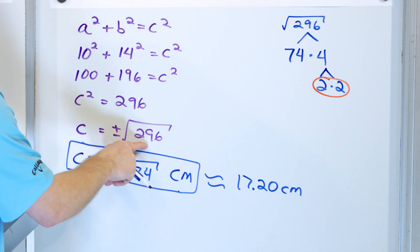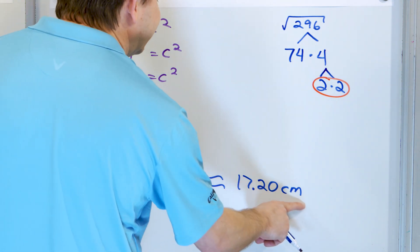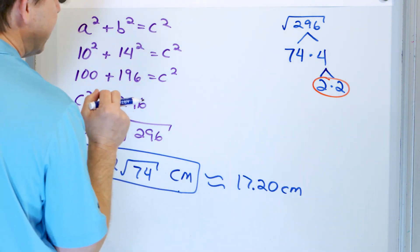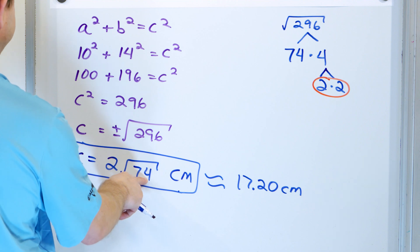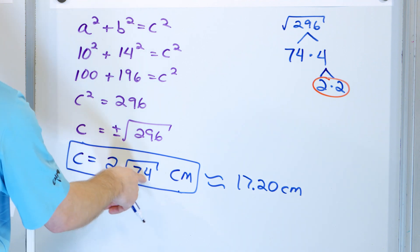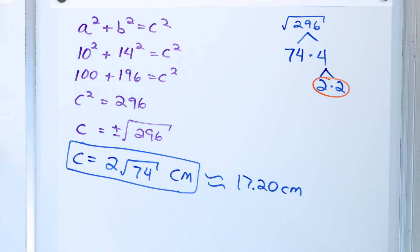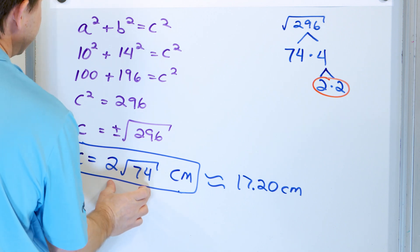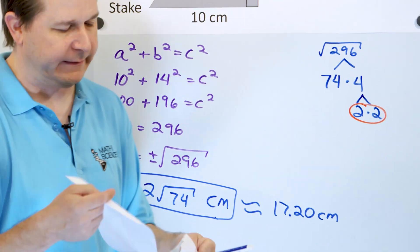If you put 296 into a calculator and take the square root, you'll get approximately 17.2. The decimals go on and on, so you round it. If you take √74 ≈ 8.6 and multiply by 2, you get the same 17.2. So 2√74 and √296 are exactly the same thing. The simplified form 2√74 centimeters is the exact answer we'd circle.